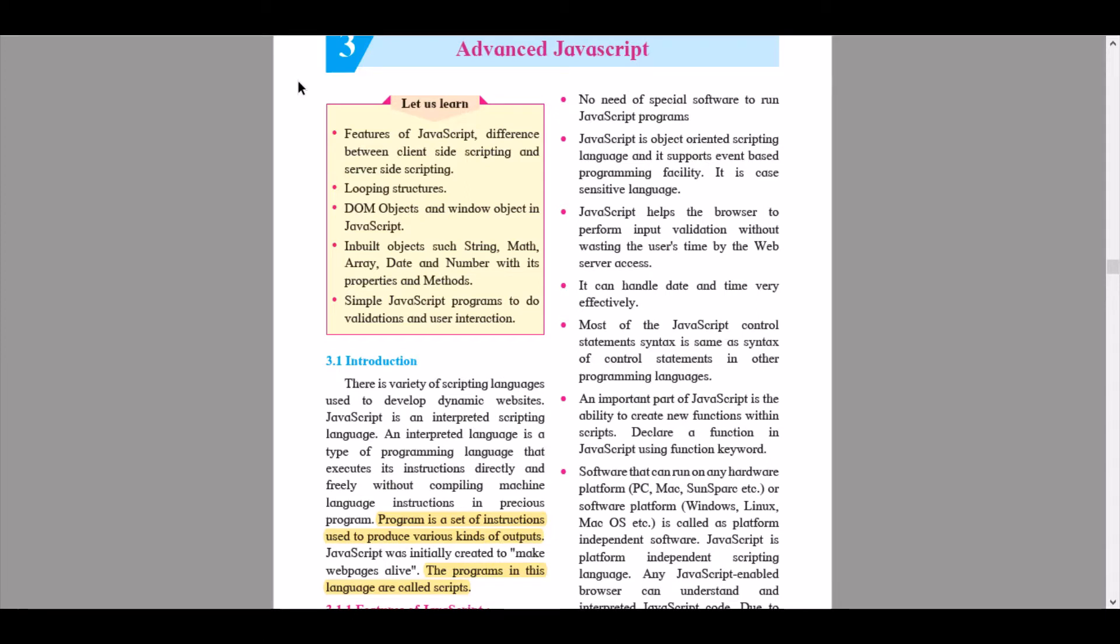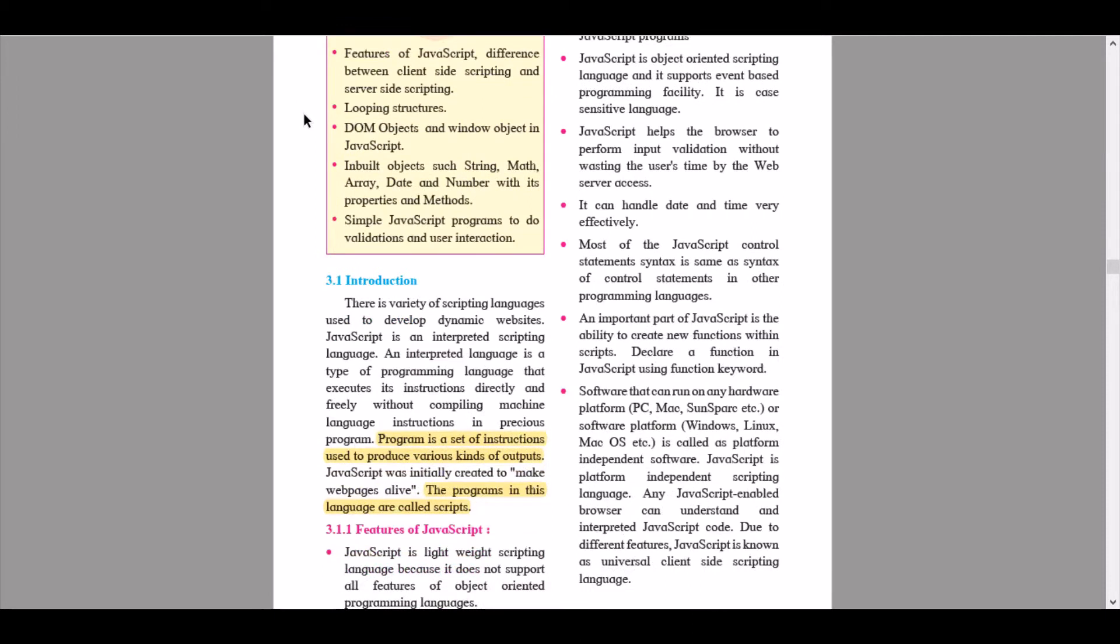Then inbuilt objects such as String, Map, Array, Date, and Number with its properties and methods. Then we continue simple JavaScript programs to do validations and user interaction. So here we start with the introduction 3.1. There is a variety of scripting languages used to develop dynamic websites.